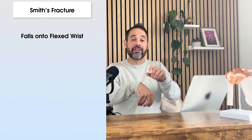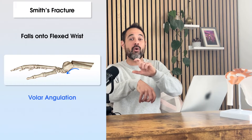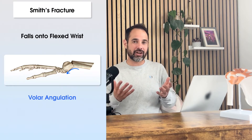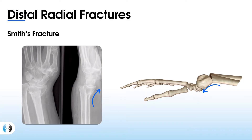Smith's fractures are effectively the opposite of Colles' fractures and are less common in practice. With a Colles' fracture, the patient falls with their wrist extended, causing posterior or dorsal angulation of the distal radius. With a Smith's fracture, a patient falls onto a flexed wrist, meaning the distal radius angulates in a volar or anterior direction. Here is an x-ray of a patient with a Smith's fracture, where you can see that anterior or volar angulation of the wrist.